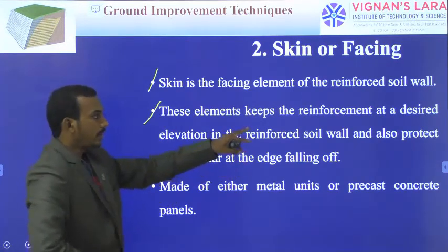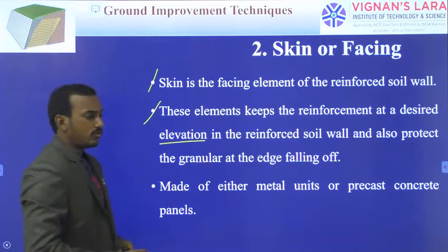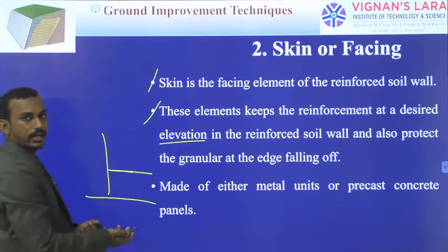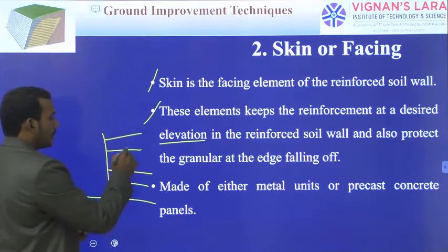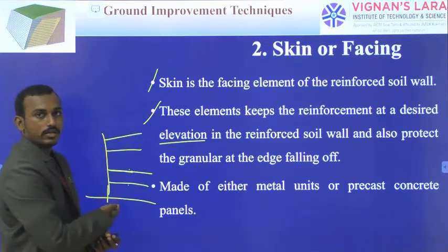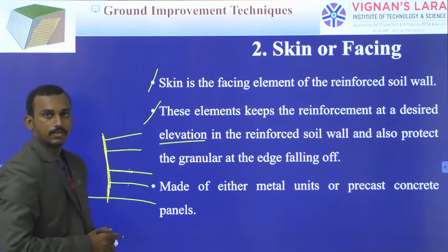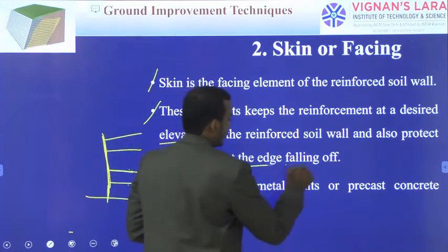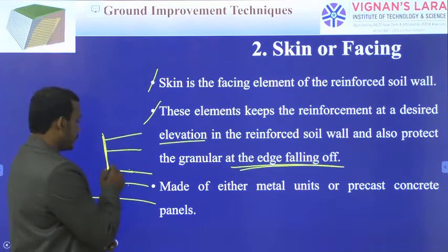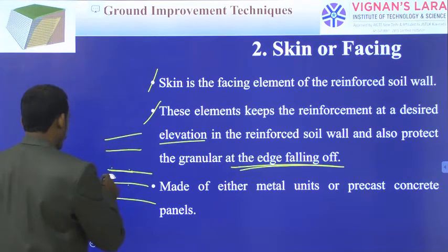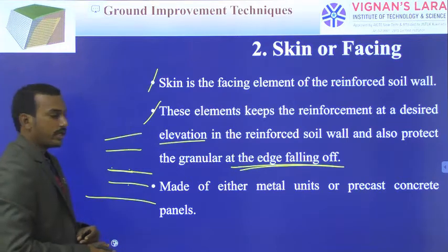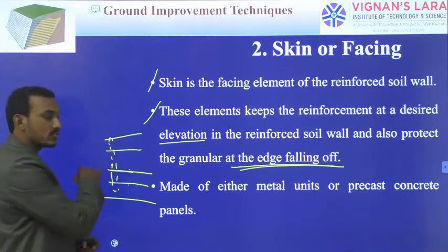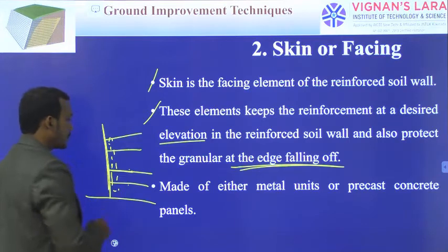The facing or skin keeps the reinforcement at the desired elevation. Without facing, the soil at the edges would fall. We need to provide some facing to prevent falling. The facing protects the granular fill at the edges and also keeps the reinforcing layers at the desired elevation in the reinforced wall. Facing is made of either metal units or precast concrete panels.